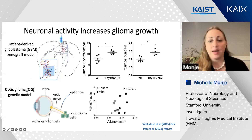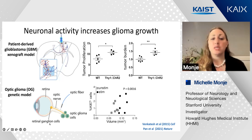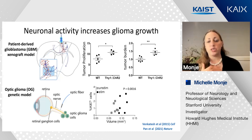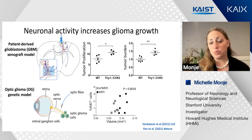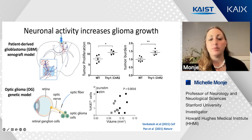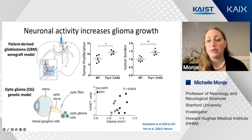More recently, in collaboration with David Gutmann's lab, we've examined a genetically engineered mouse model of low-grade glioma that happens in association with the tumor predisposition syndrome neurofibromatosis type 1. In this mouse model, nearly 100% of mice develop tumors specifically within their optic nerve and optic chiasm at exactly nine weeks of age. We find that if we optogenetically stimulate optic nerve activity prior to the onset of these tumors—beginning around six weeks of age—the tumors that develop are much larger than those in identically manipulated but not optogenetically stimulated littermate controls.